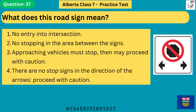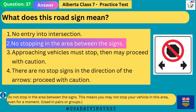What does this road sign mean? 1. No entry into intersection. 2. No stopping in the area between the signs. 3. Approaching vehicles must stop, then may proceed with caution. 4. There are no stop signs in the direction of the arrows, proceed with caution. The answer is 2: no stopping in the area between the signs. Do not stop in the area between the signs — this means you may not stop your vehicle in this area, even for a moment. Used in pairs or groups.